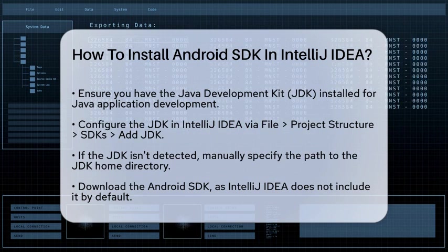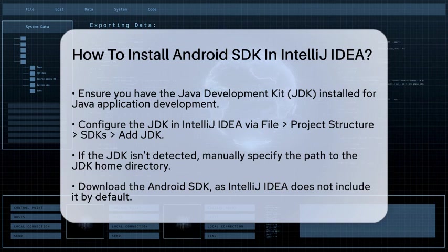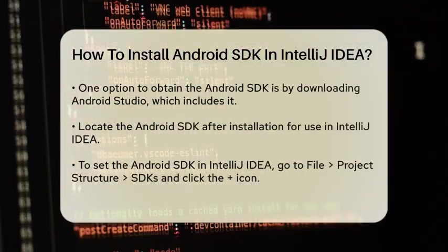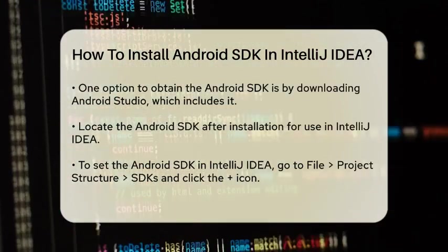go to File, Project Structure, SDKs, and then select Add JDK from the list. If the JDK is not automatically detected, you can add it manually by specifying the path to the JDK home directory on your computer.